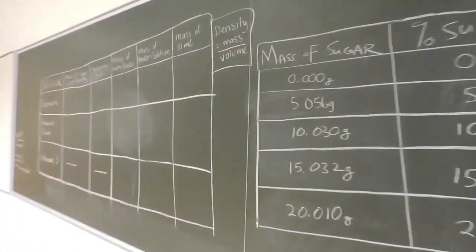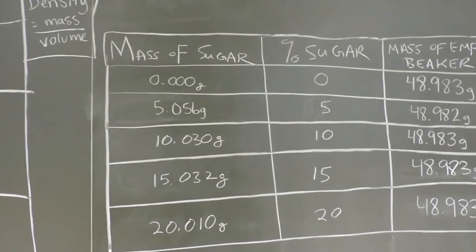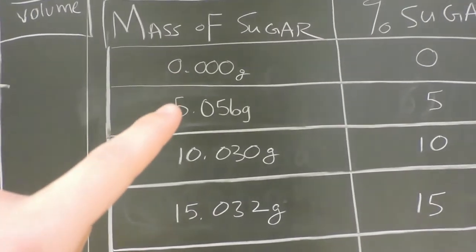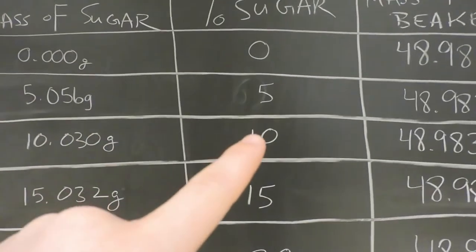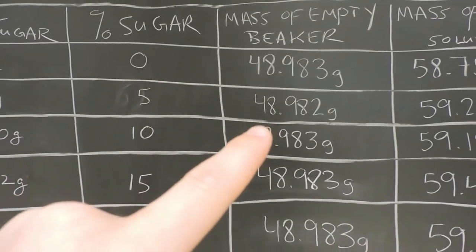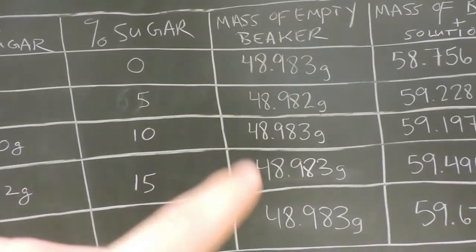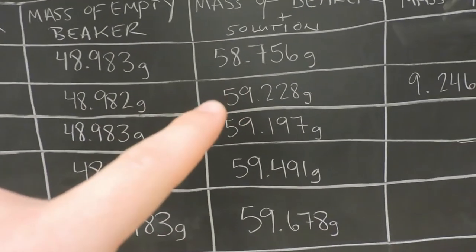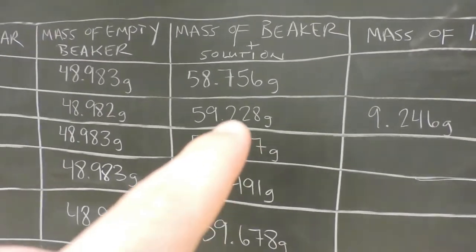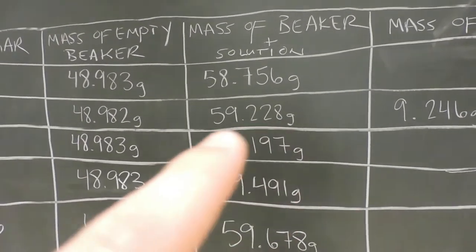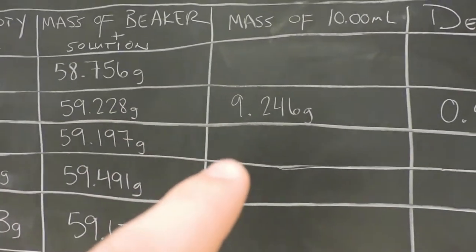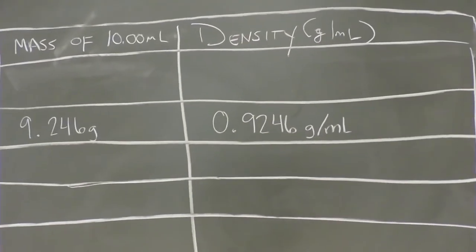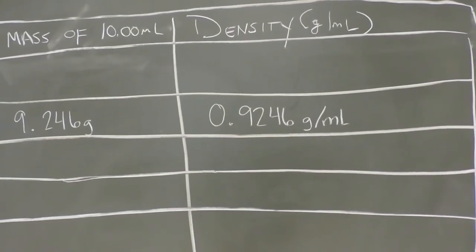As an example, we'll perform these calculations on a 5% sugar solution. So for 5% sugar solution, the mass of the sugar is 5.056 grams. The mass of the empty beaker was 48.982 grams. The mass of the beaker plus 10 milliliters of the 5% sugar solution is 59.228 grams. So if we take the mass of the beaker solution and subtract the mass of the empty beaker, we'll find that the mass of 10 milliliters is 9.246 grams. Therefore, the density, which is grams per milliliter, will be 0.9246 grams per milliliter.